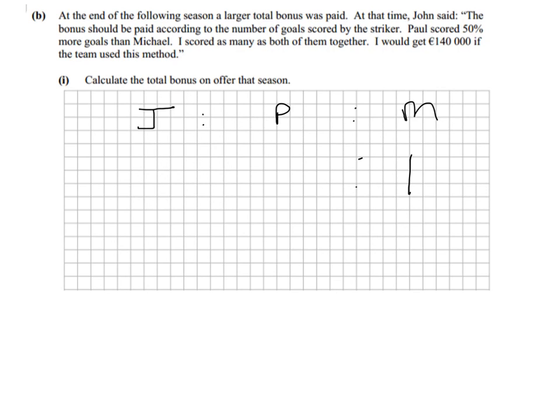Paul scored 50% more than Michael. Well, that's easy to work out now because 50% more than one is 1.5. And then John says I scored as many as both of them together. So John scored as many as both of these guys together. That would make John's part 2.5. So now at least we've got a ratio that we can work with. The key here was figuring out who had the smallest share and letting them equal to one.